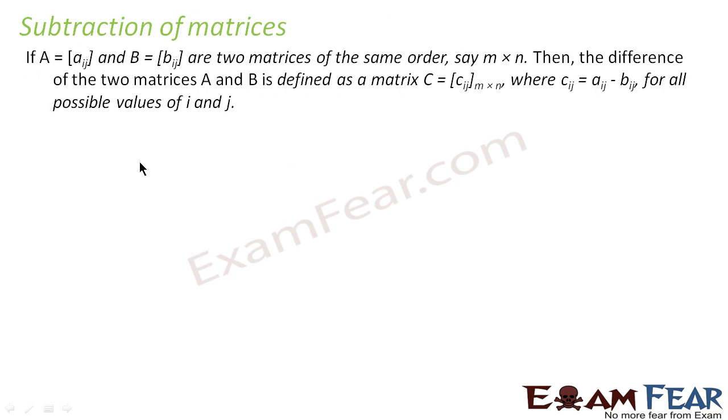So mathematically, if there are two matrix A and B with the elements a_ij, b_ij of order m into n, please note here also, the order has to be same. The difference is nothing but a matrix c_ij, where c_ij is nothing but a_ij minus b_ij.